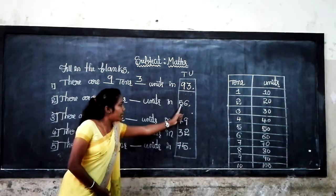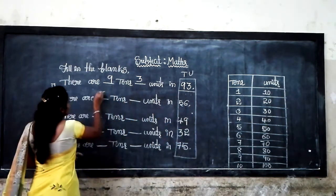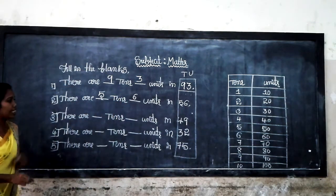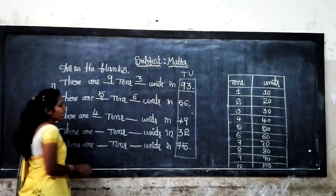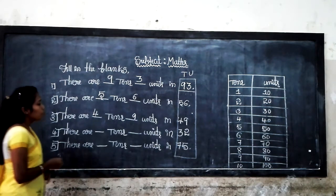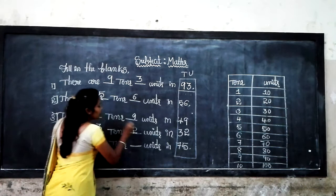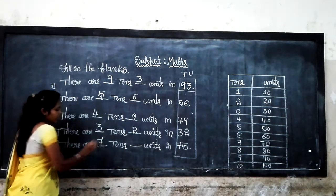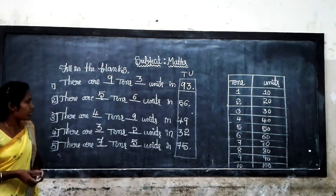56 — how many tens and how many units? There are 5 tens and 6 units. In 49, there are 4 tens and 9 units. In 32, there are 3 tens and 2 units. In 75, there are 7 tens and 5 units.